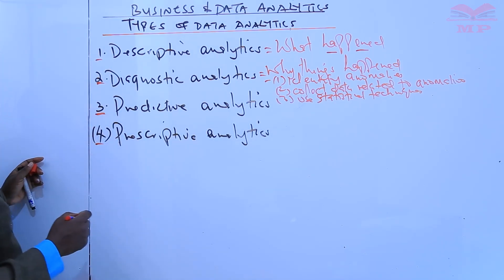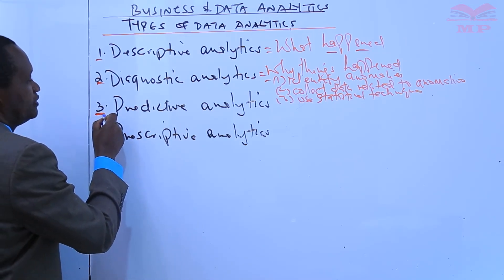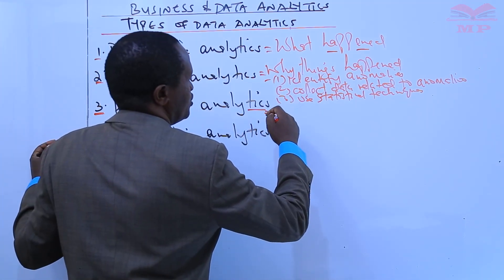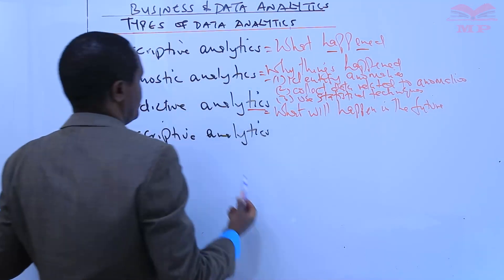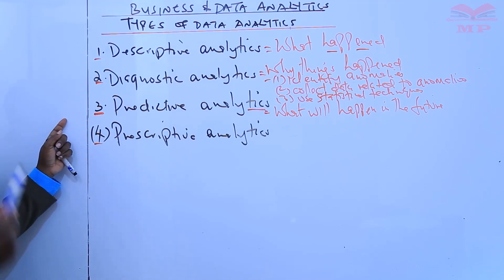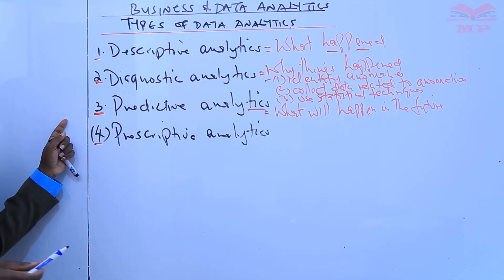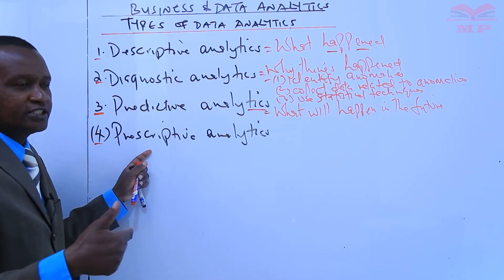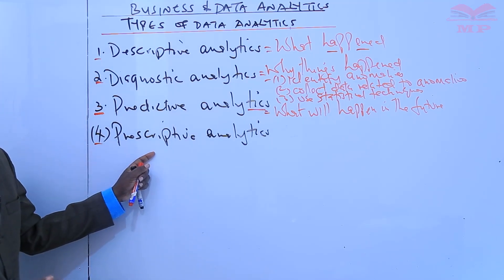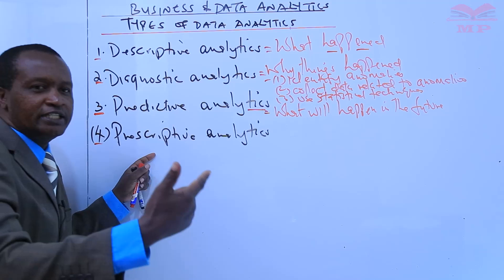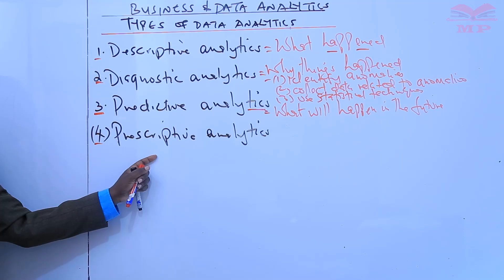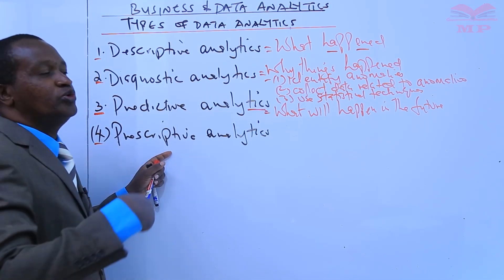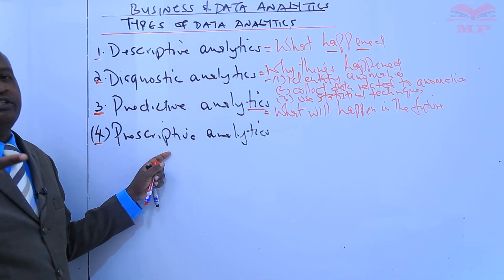The third type of data analytics is predictive analytics. Predictive analytics helps answer the question: what will happen in the future? The techniques here use historical data to identify trends, then determine if they are likely to recur. The predictive analytical tools provide valuable insight into what may happen in the future, and its techniques include a variety of statistical as well as machine learning techniques such as neural networks, decision trees, and regression.